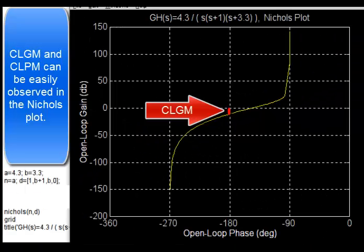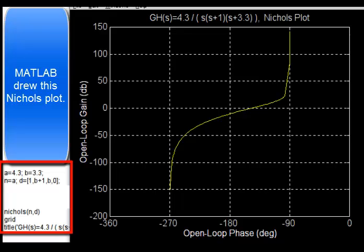Closed-loop gain margin and closed-loop phase margin can be easily observed in the Nichols plot. MATLAB drew this Nichols plot.